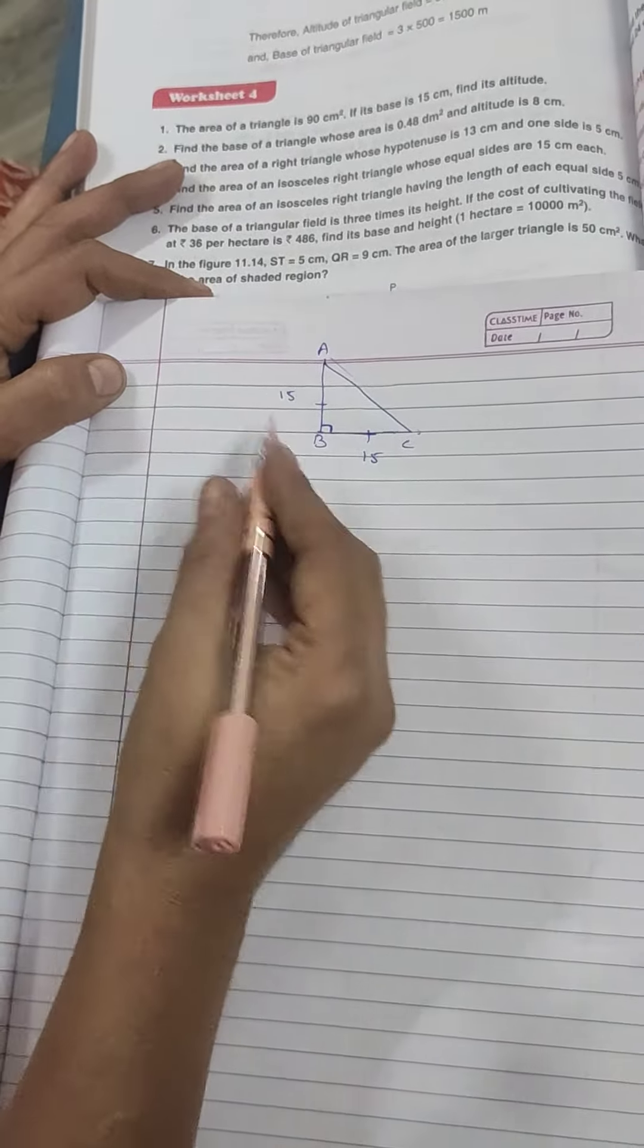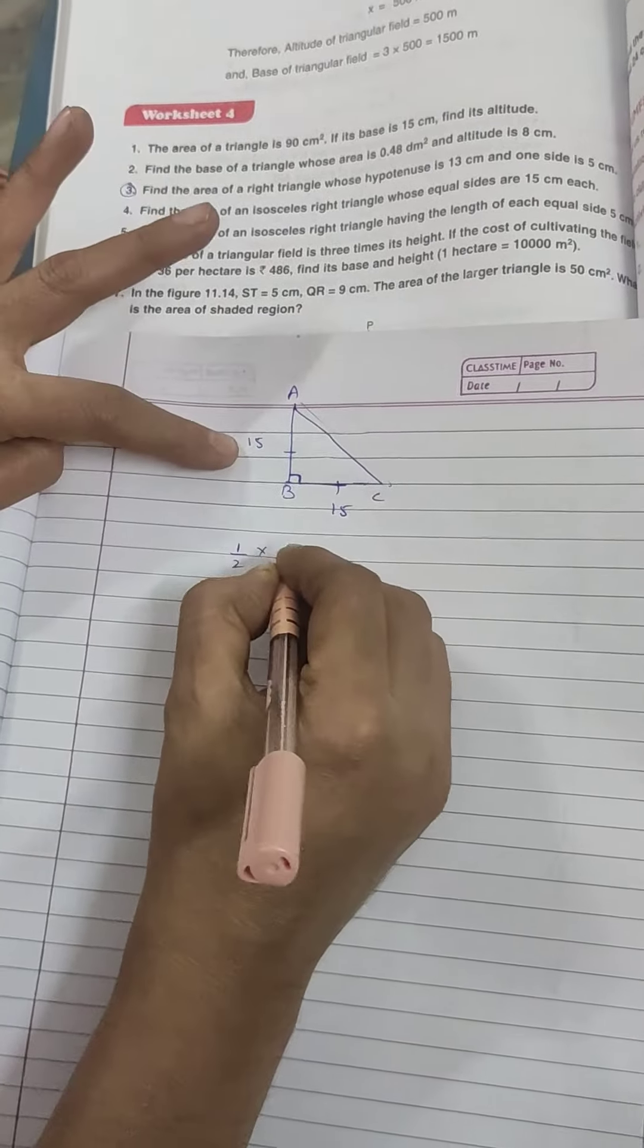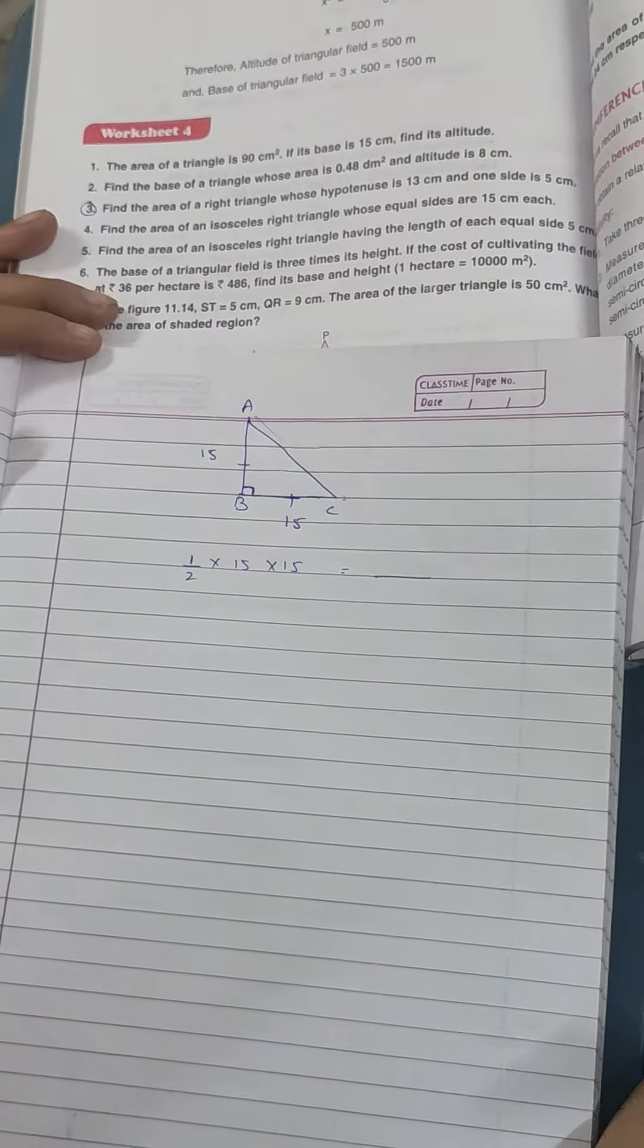What is the area? Half base into height. Half, 15 into 15. Simple.